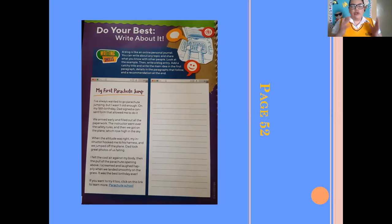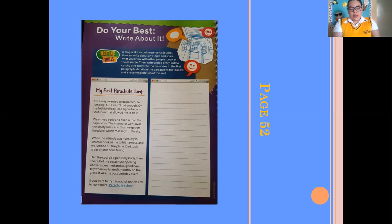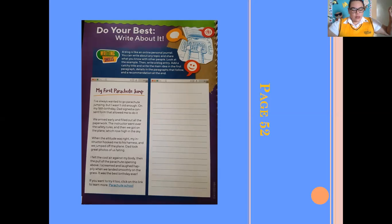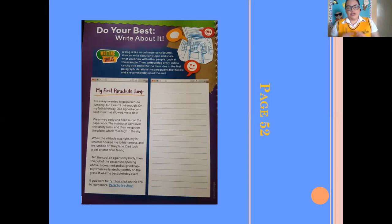Here you're going to create your personal blog. You're going to write three paragraphs. This space is really small, so you are going to write it in your optional pages or on a white piece of paper. I want you to write a catchy title, then the main idea, then add the details in the second paragraph, and at the third paragraph you are going to write your recommendations.